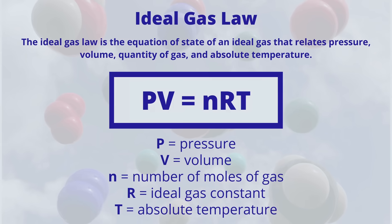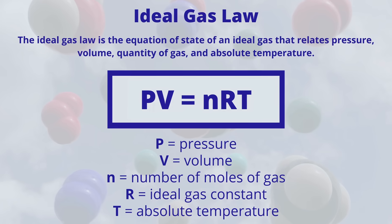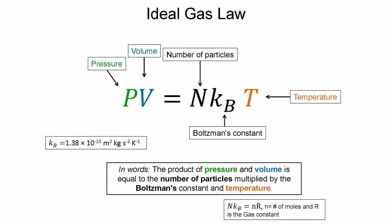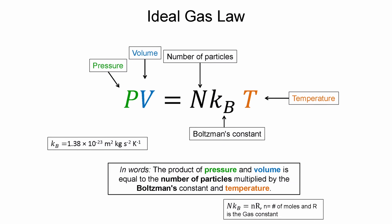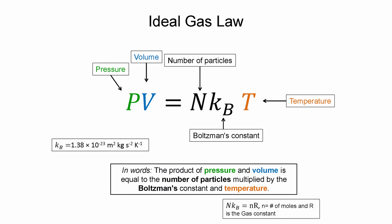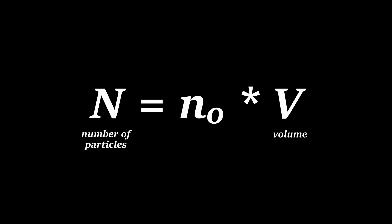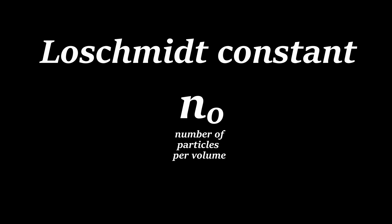You may know the ideal gas law through this expression, but it can also be expressed in terms of the number of particles present and the Boltzmann constant. N can be expressed as the volume of a substance times another constant that represents the number of particles of an ideal gas per volume at standard temperature and pressure. This is the Loschmidt constant, the constant that Loschmidt himself calculated in 1865.